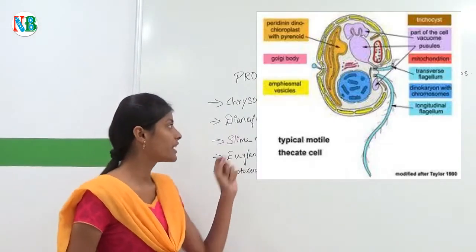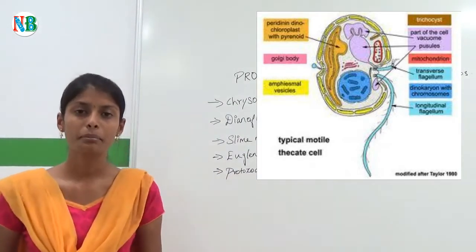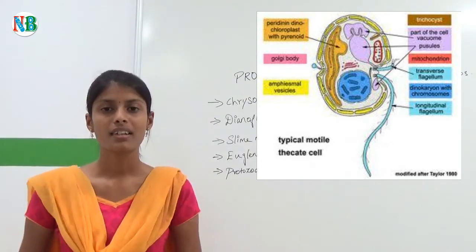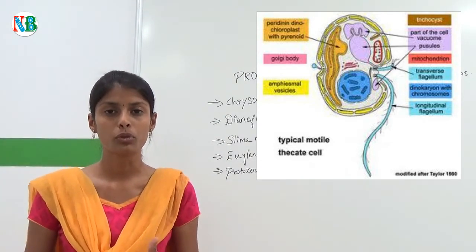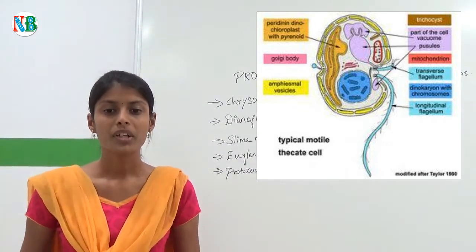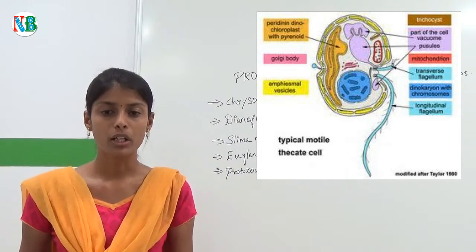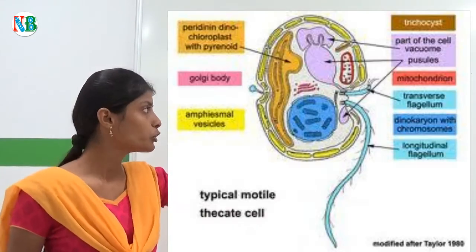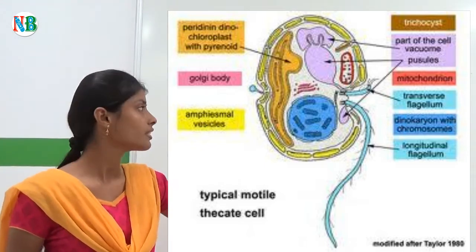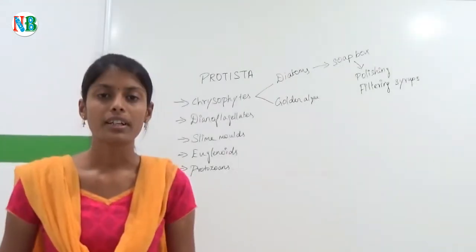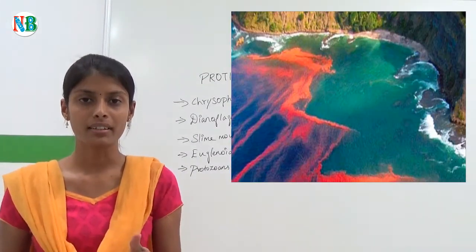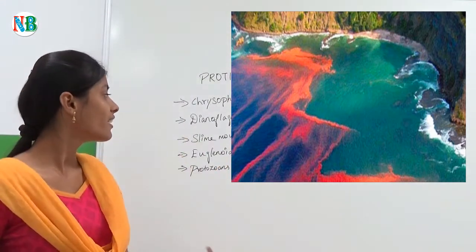Next are dinoflagellates. They are mostly marine and photosynthetic. The speciality of dinoflagellates is they appear in different colors like yellow, green, blue, brown, and red, because of the pigments present in the cell. Their cell wall has stiff cellulose plates on the outer surface, and they have two flagella — one is long longitudinal and the other is in the transverse plate. Very often, red dinoflagellates multiply rapidly and make the sea appear red in color.